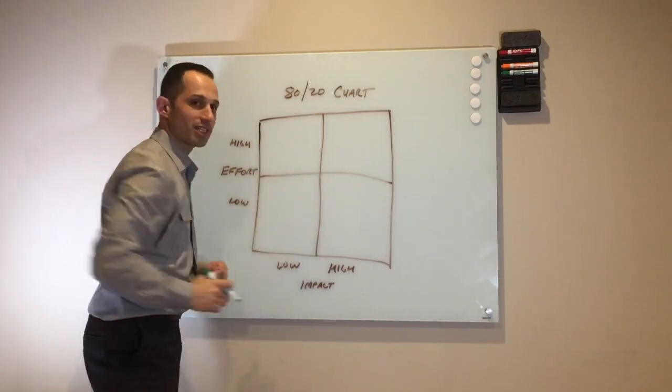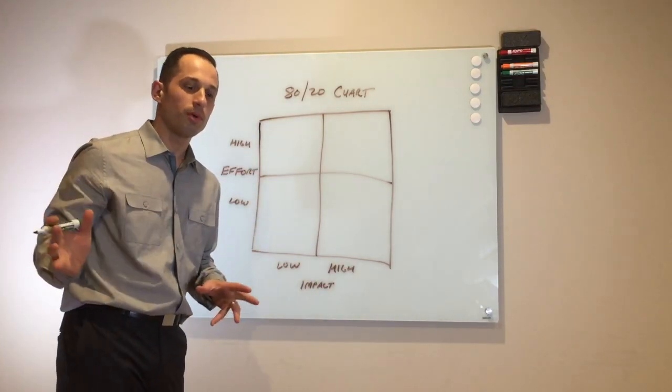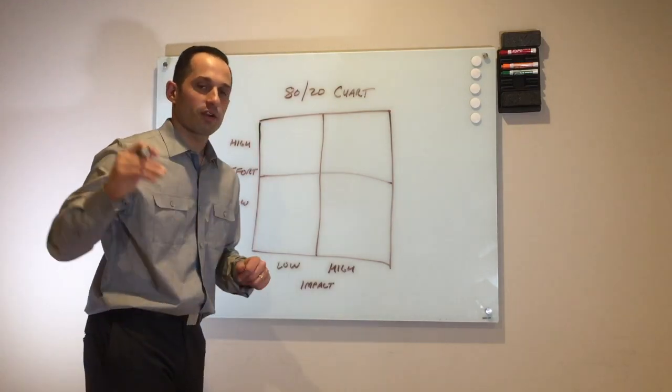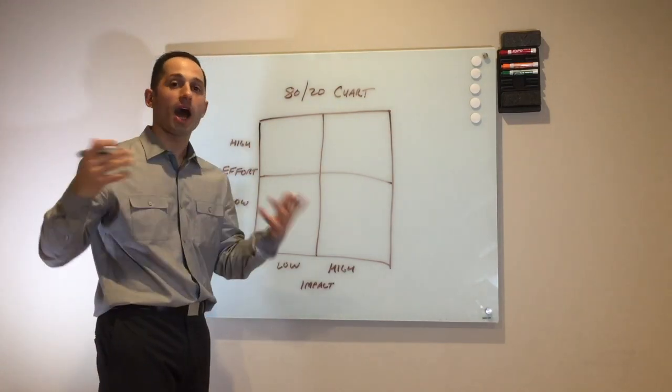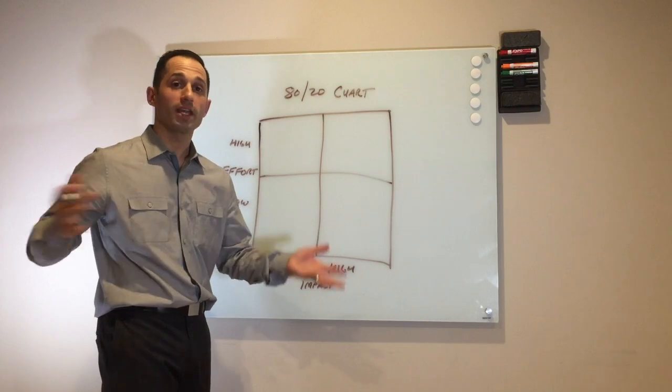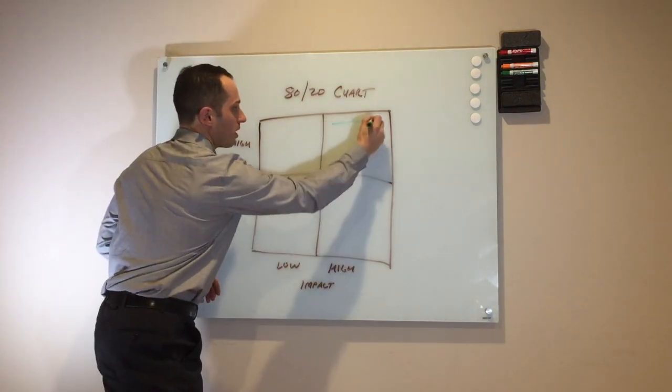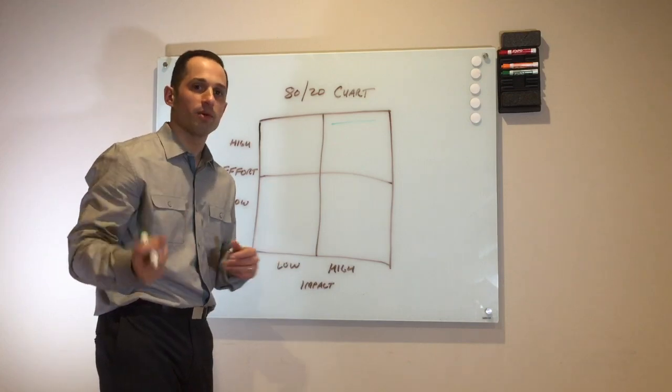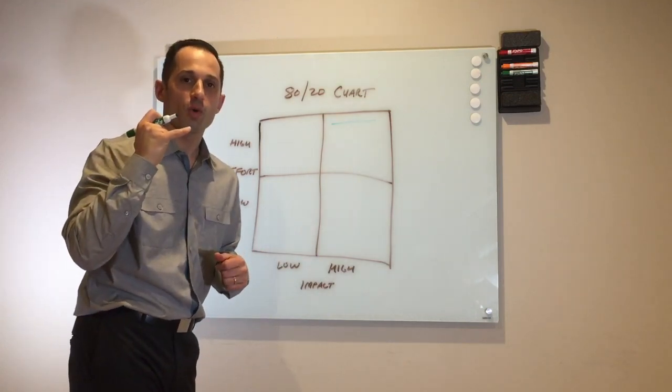All of the tasks that are going to be high effort but high return, for example writing a large proposal, would go up here. All the tasks that are low effort, high return, for example giving a client a short phone call to check in with them, will go here.